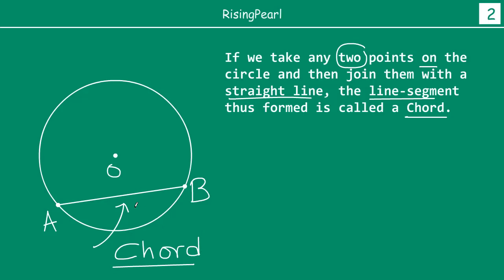Now there is one special type of chord. If you take a point — let's call it C — such that when you take point C and point B and join them by a straight line, BC is a chord, because a chord is any line segment joining two points on the circle. But this chord is special in that it passes through the center.